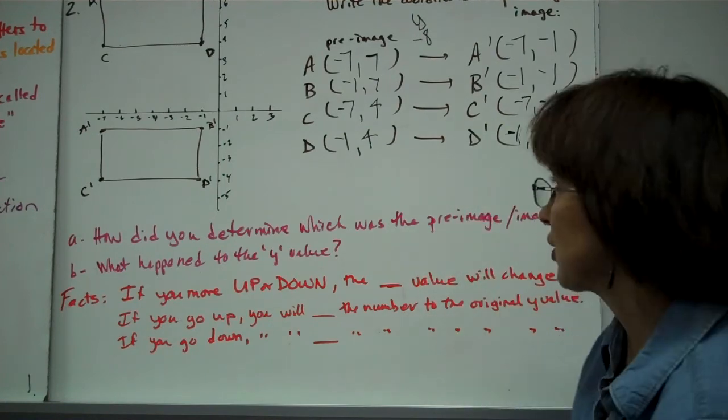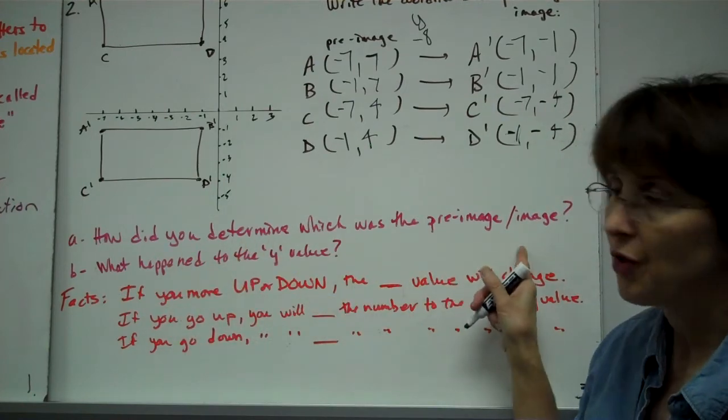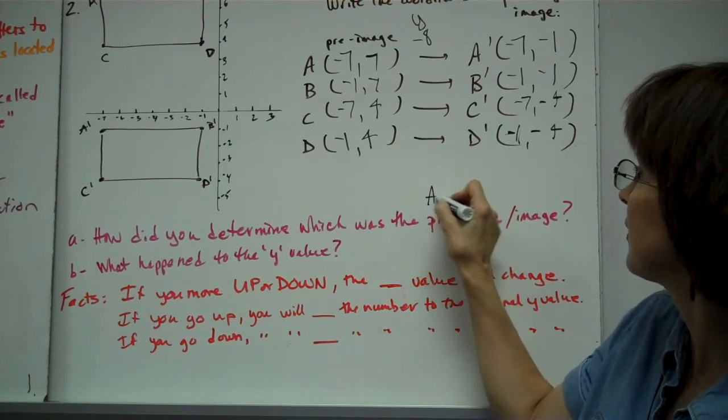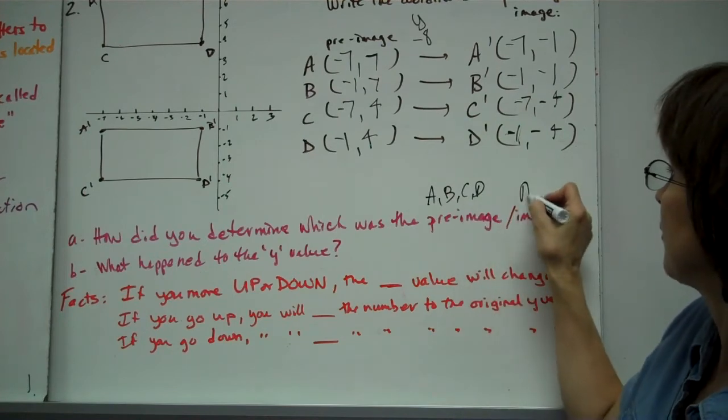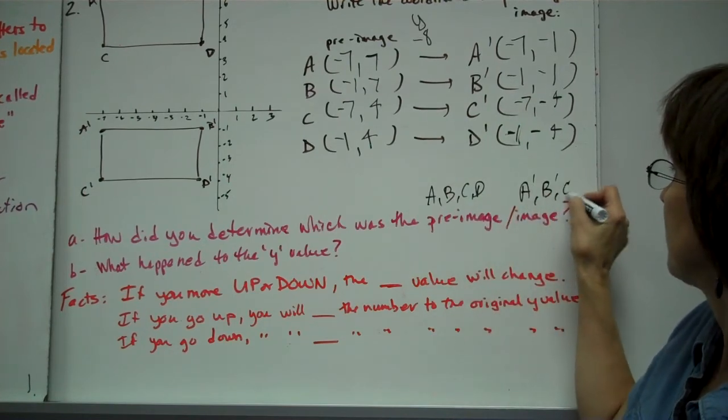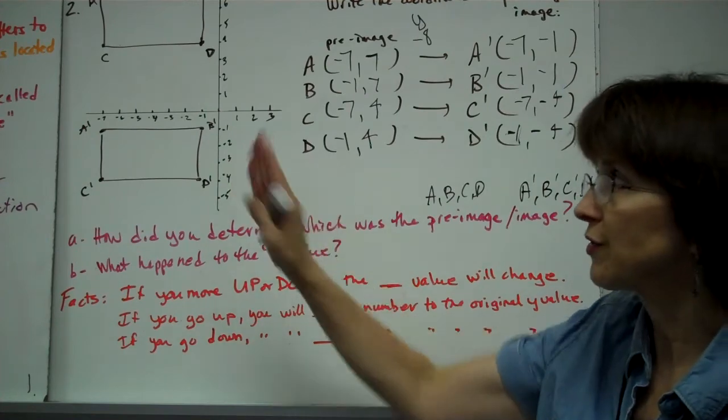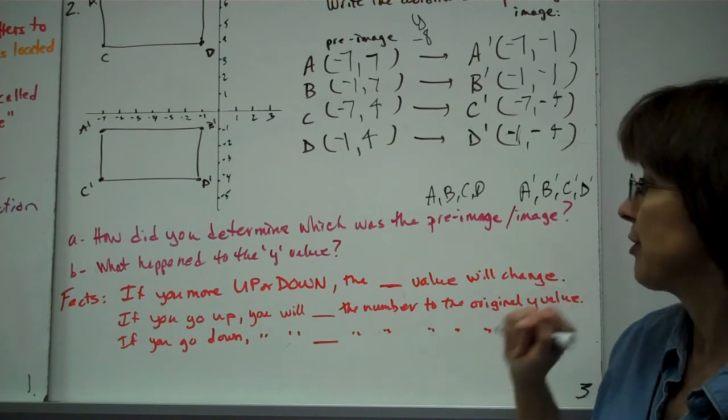Let's answer some questions with this one. How did you determine which was the pre-image and the image? You could say A, B, C, and D are just plain, and the image is A prime, B prime, C prime, D prime. So basically, you just looked at it and saw the ones without the prime are your pre-image. The ones with the prime, with the dashes, are your image.